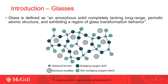The structure of glasses is also represented by the number of bridging oxygens and non-bridging oxygens. Bridging oxygens are the oxygens that link the network polyhedra. Non-bridging oxygens are the oxygens that don't link to the network polyhedra.